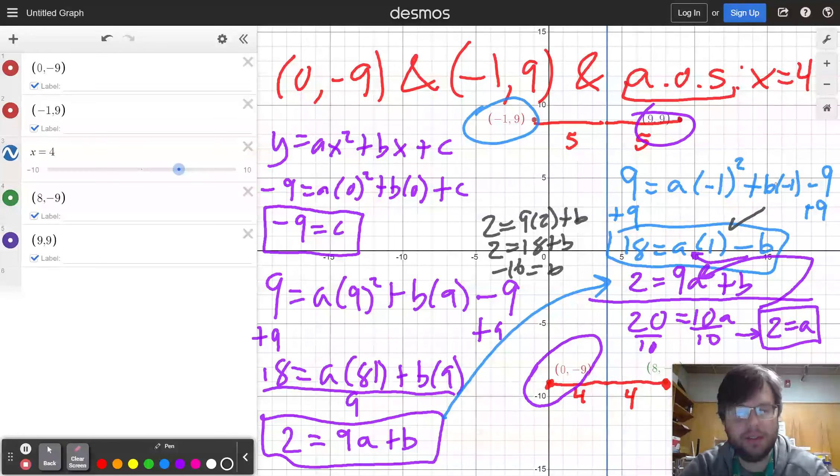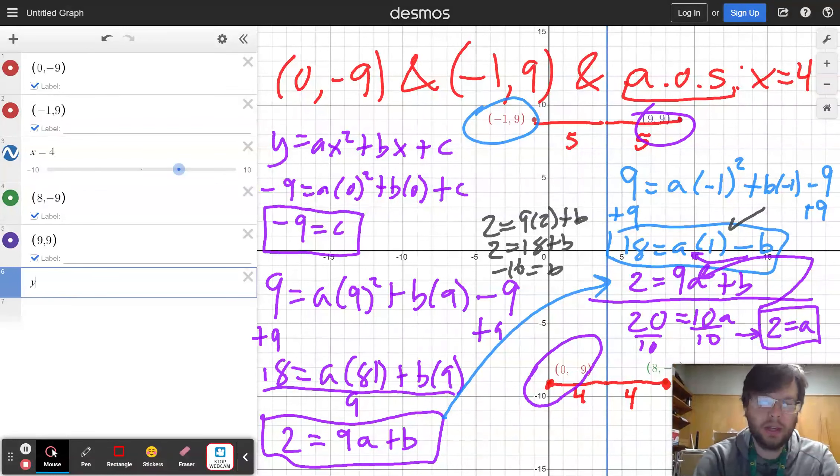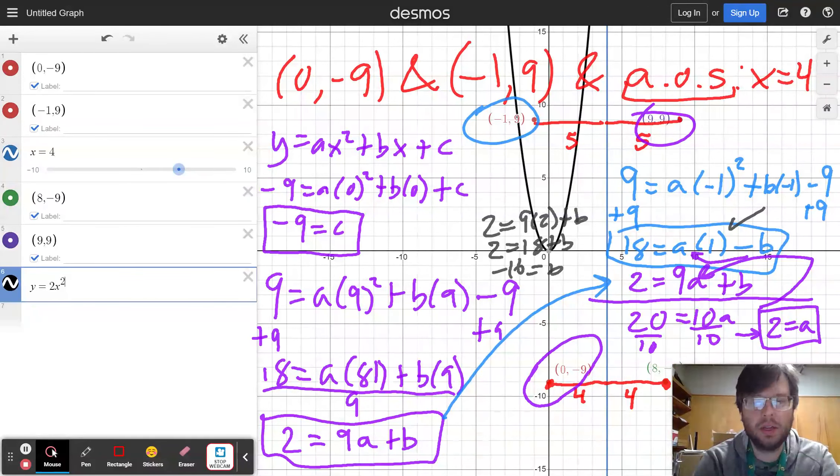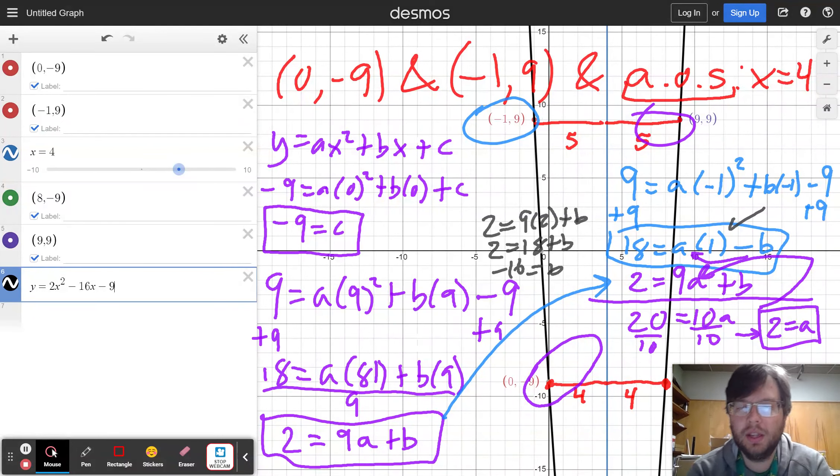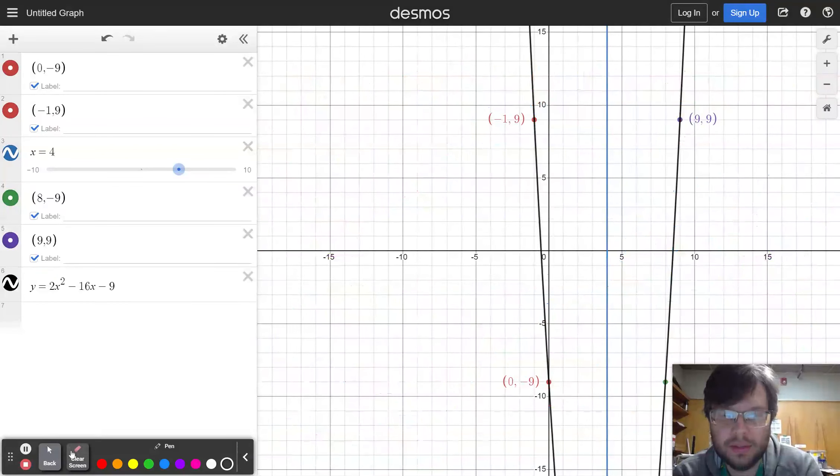So as a final check, what I can do is plug in the values of a, b, and c in order. Y equals 2x squared. B is negative 16. C is negative 9. And you'll see that my graph goes exactly through all of the points that I graphed.